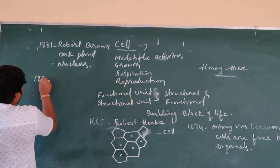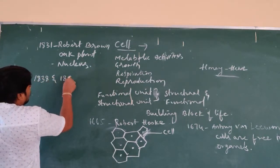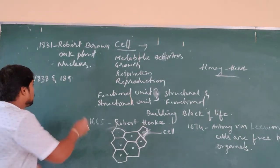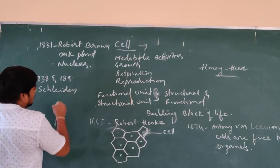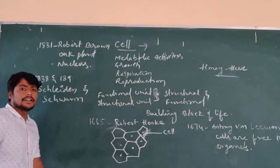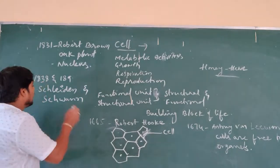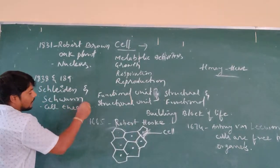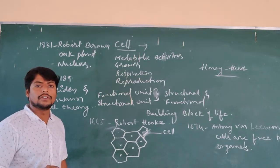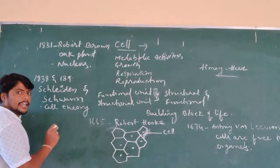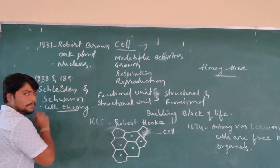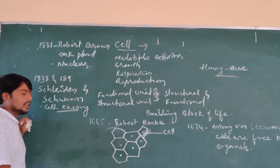Between 1838 and 1839, two scientists called Schleiden and Schwann developed the cell theory. So the cell theory was proposed by Schleiden and Schwann in the year 1838 and 1839.